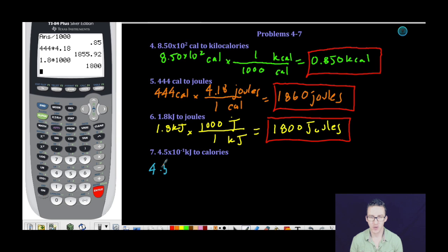And then ultimate trickery here, 4.5 times 10 to the negative one kilojoules. We need to get that all the way to calories. Well, the first thing I need to do is convert kilojoules to joules, recognizing that that relationship is 1,000 to 1.